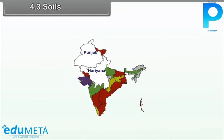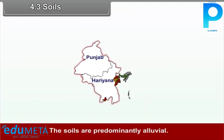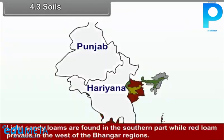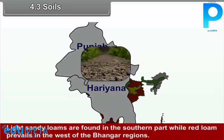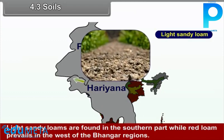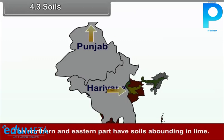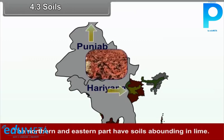4.3 Soils. The soils are predominantly alluvial. Light sandy loams are found in the southern part, while red loam prevails in the west of the Bhangar regions. The northern and eastern parts have soils abounding in lime.